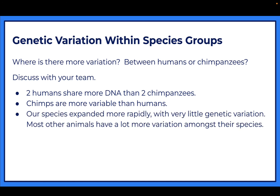Our species is less variable because it expanded more rapidly with very little genetic variation. Chimpanzees took a long time to expand their populations, and as populations expand, mutations take place. Humans have been around for less time and our population expanded very quickly due to our ability to use tools, the Industrial Revolution, and so on. So we haven't changed much in our DNA, whereas chimpanzees and other species have been around much longer and had more time for their DNA to change. That's why there's more variation within chimpanzees than within the human population.